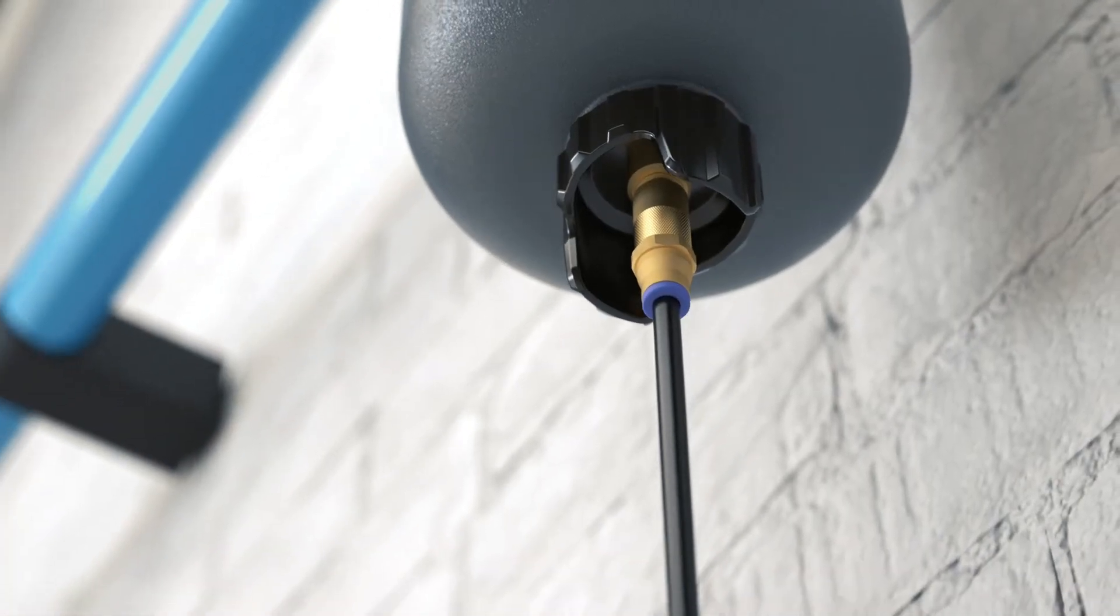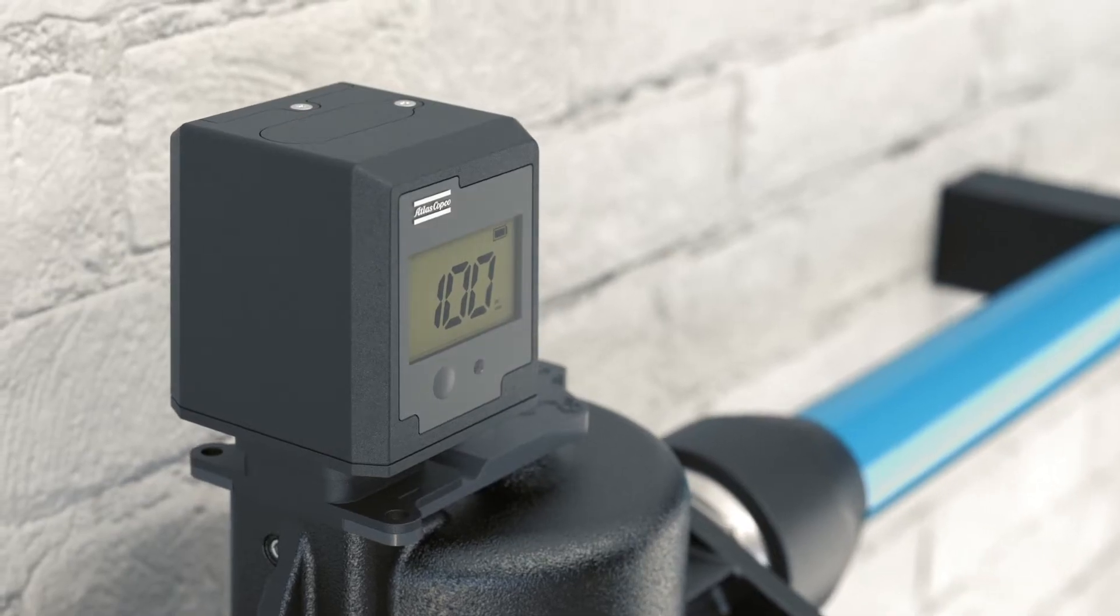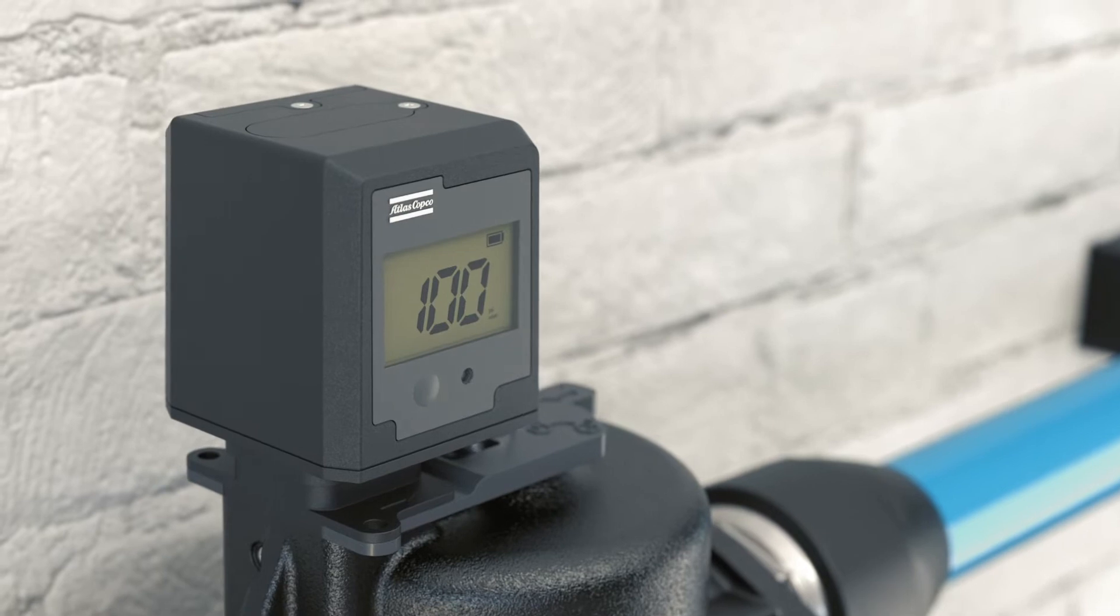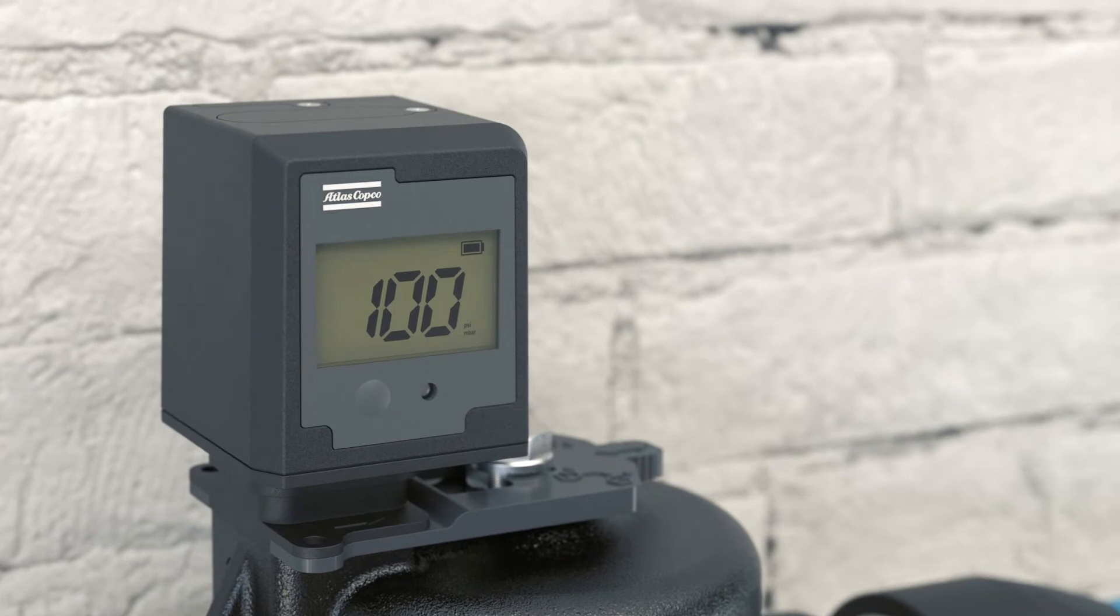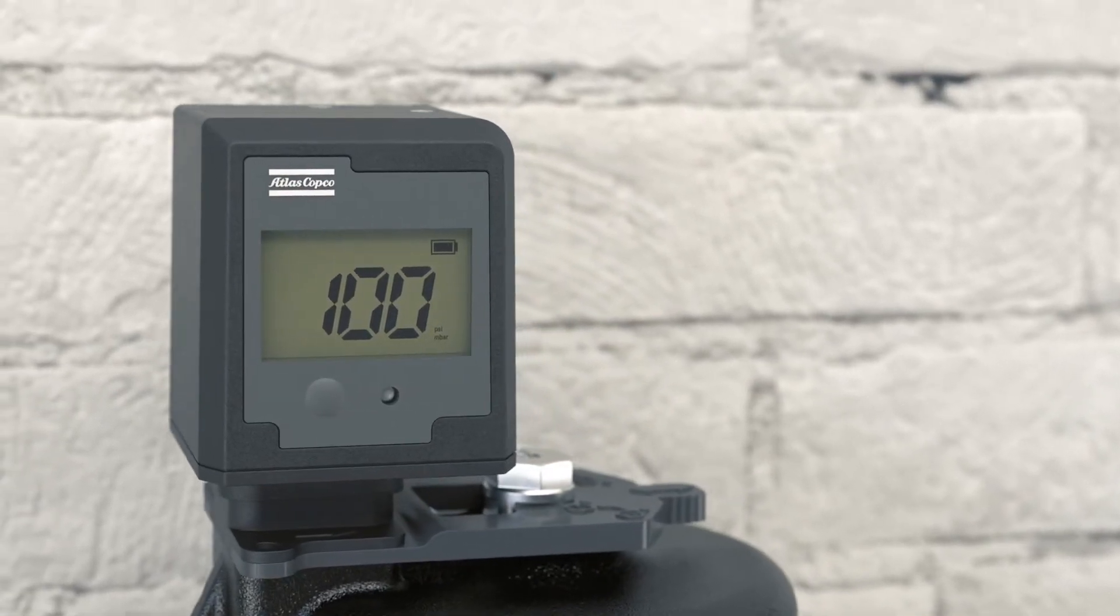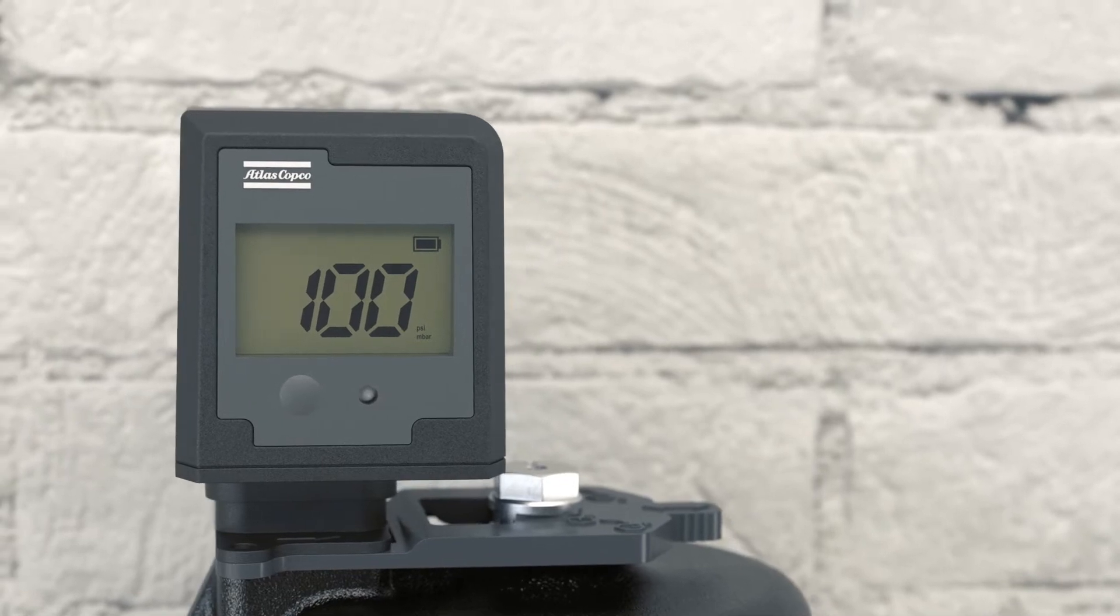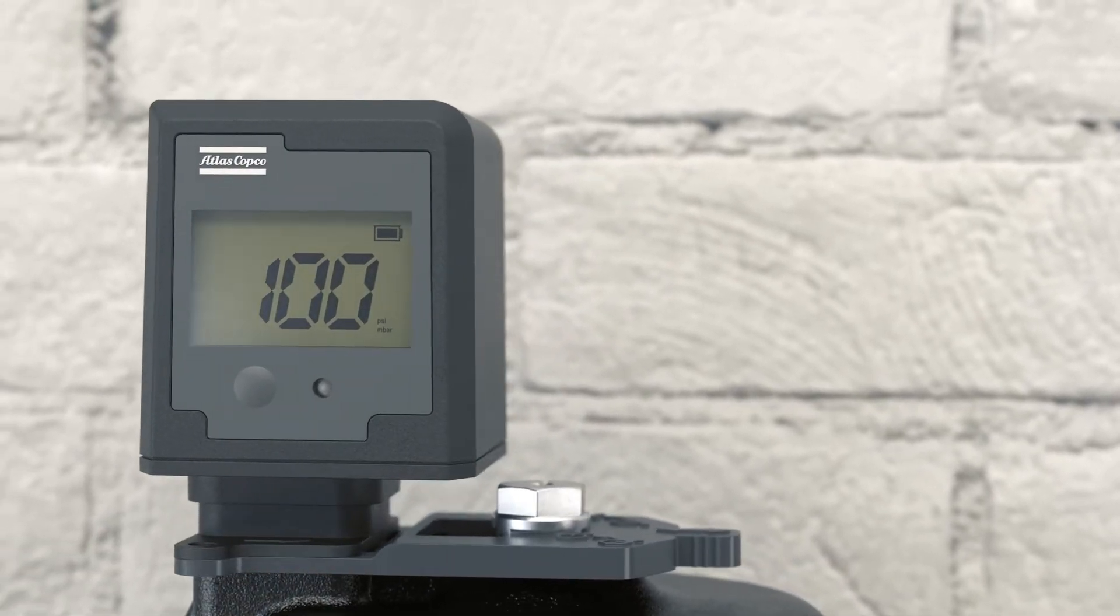In addition, Atlas Copco's new filters come with an easy-to-read service indicator. It shows the filter's running hours, differential pressure, and maintenance status, allowing you to maximize the lifespan of your filters and to plan the best time for maintenance, even from a distance, as the malfunction alert on the filter head can be connected to a remote monitoring device.